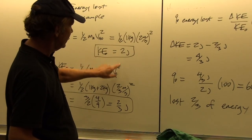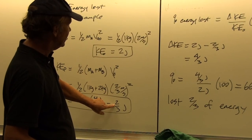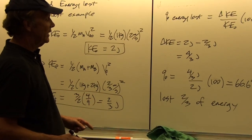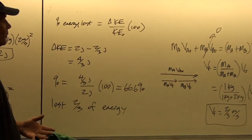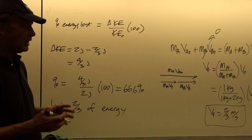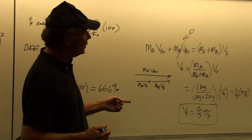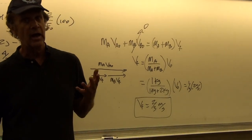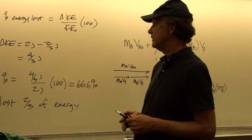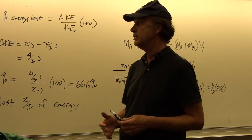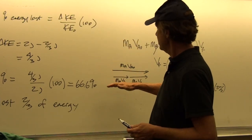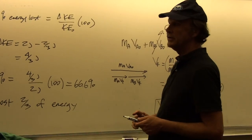We started with two joules and only have two-thirds left. That energy could go into heat, friction, or other forms — it's no longer in the system. And we didn't know how much energy was lost, so we couldn't have used conservation of energy to solve this problem. But we use conservation of momentum first, because we don't lose momentum during a collision.